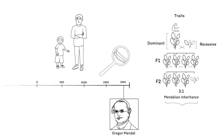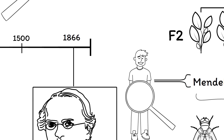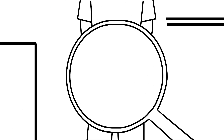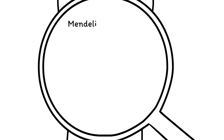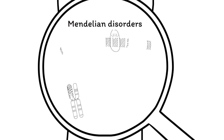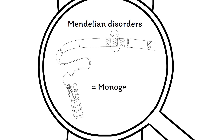Mendelian inheritance can be seen in all sexually reproducing organisms. In humans, only a minority of all traits follow a Mendelian inheritance pattern, and they are often seen in the form of Mendelian disorders. Since one gene is involved, they are also called monogenic disorders.